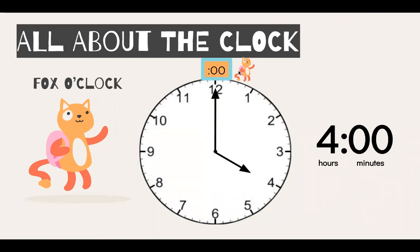So Fox O'clock looks at the hour hand, our short hand, to figure out what time it is. It is four hours and zero minutes on our clock.